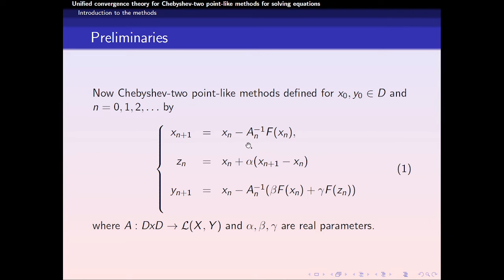Now we have this method, Chebyshev's two-point-like method, defined for x₀, y₀ in D in this scheme form, where α, β, and γ are real parameters.